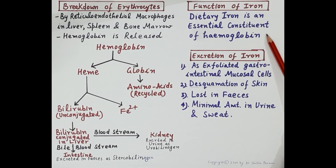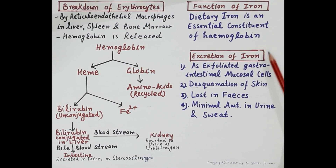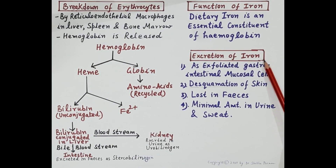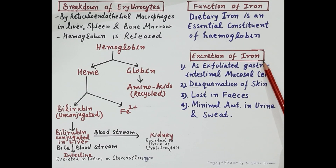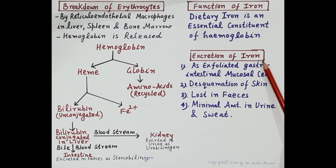Regarding the functions of iron, iron is required for the synthesis of hemoglobin, and therefore dietary iron is an essential constituent of hemoglobin. When we talk about the excretion of iron, most of the iron released by the breakdown of RBCs is recycled, and only some of it is excreted.